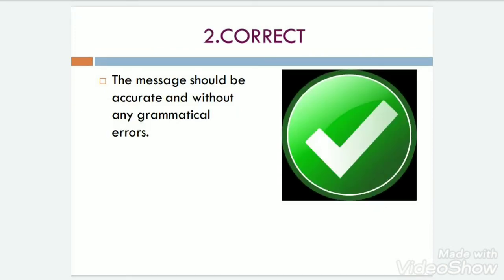The second C is correct. The message should be accurate and without any grammatical errors. You always have to give a correct message or correct information and not the wrong one. For example, if you know that Raju is leaving to Delhi tomorrow and you say that Raju went to Delhi, that means you have given a wrong message.